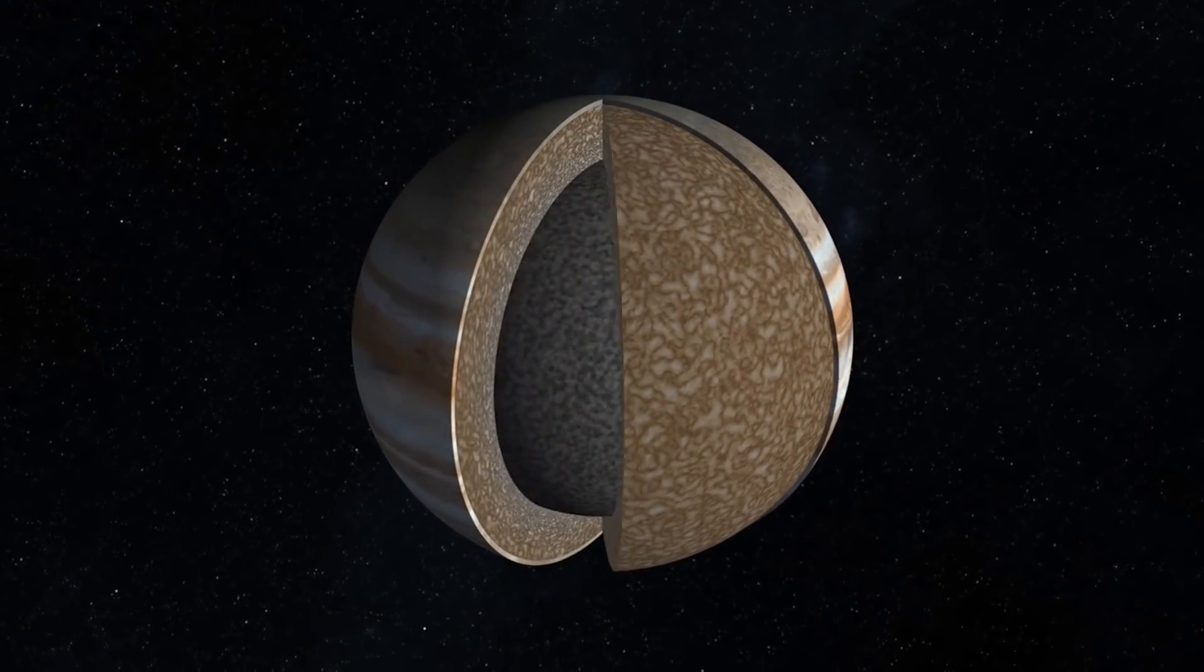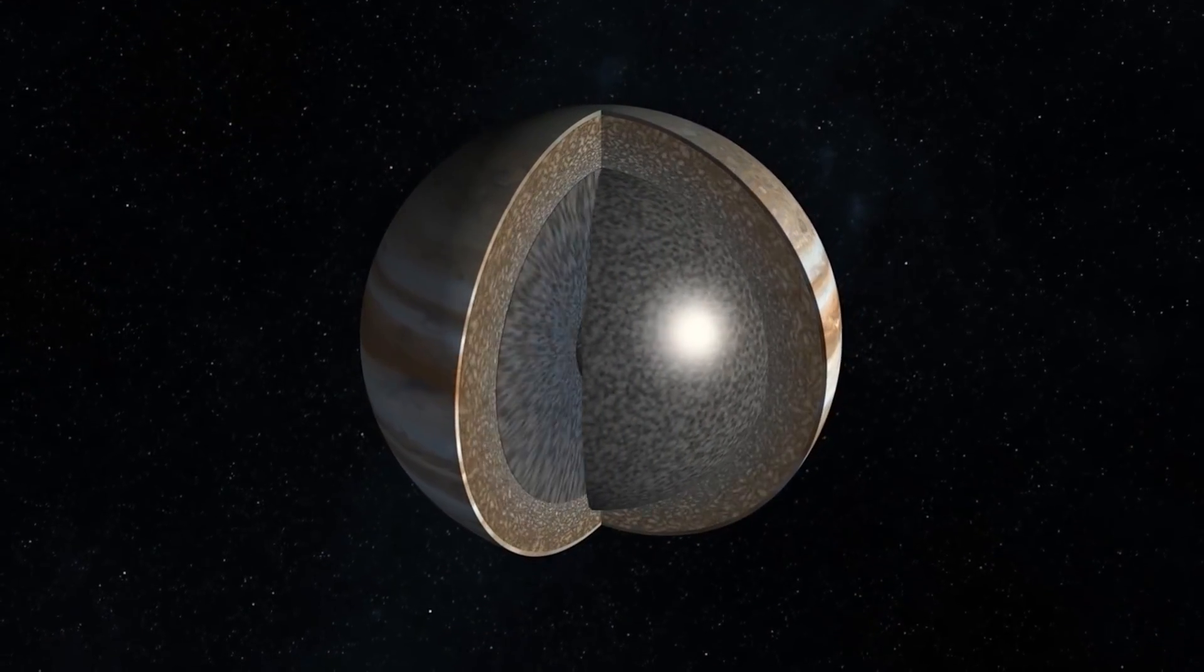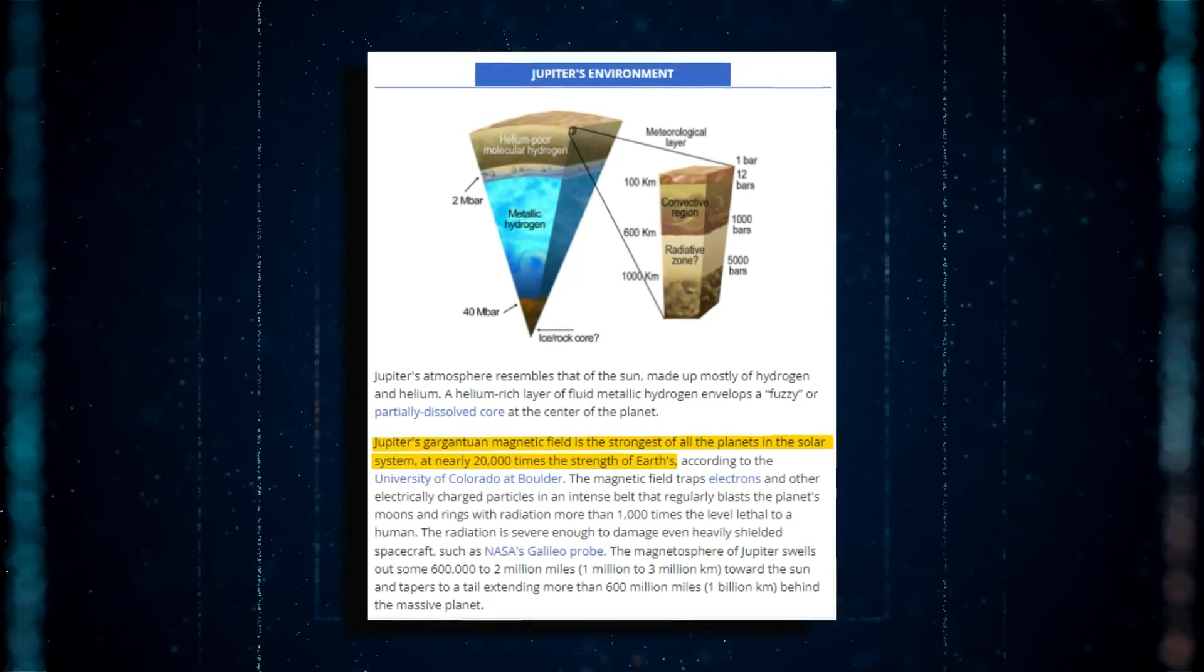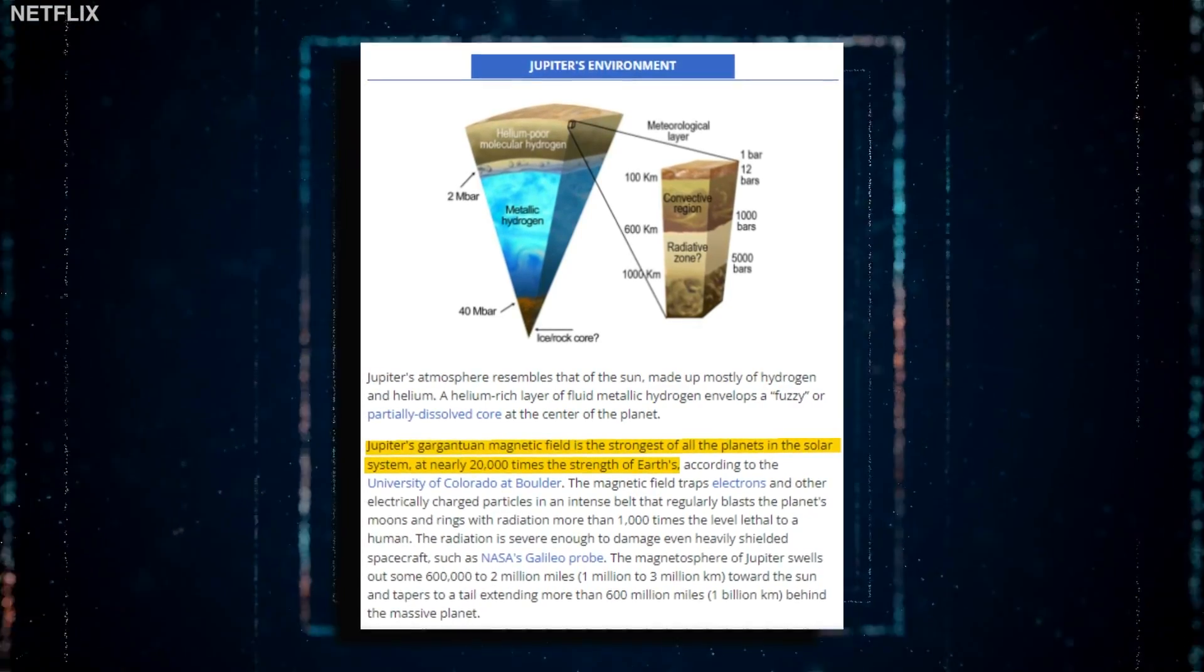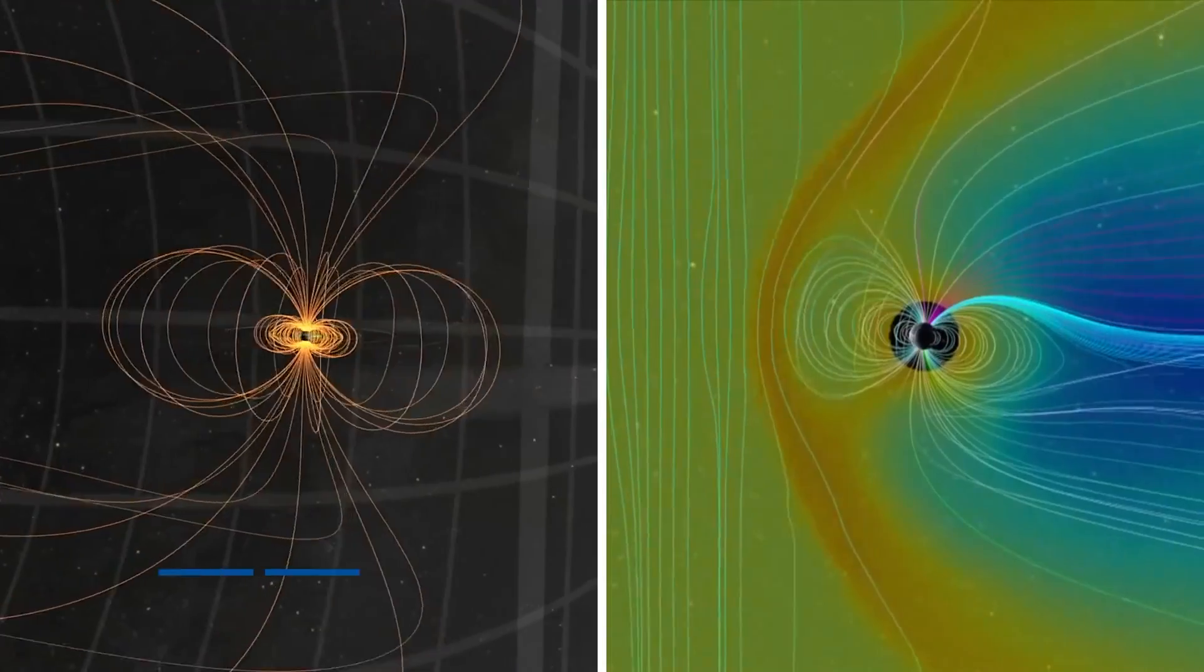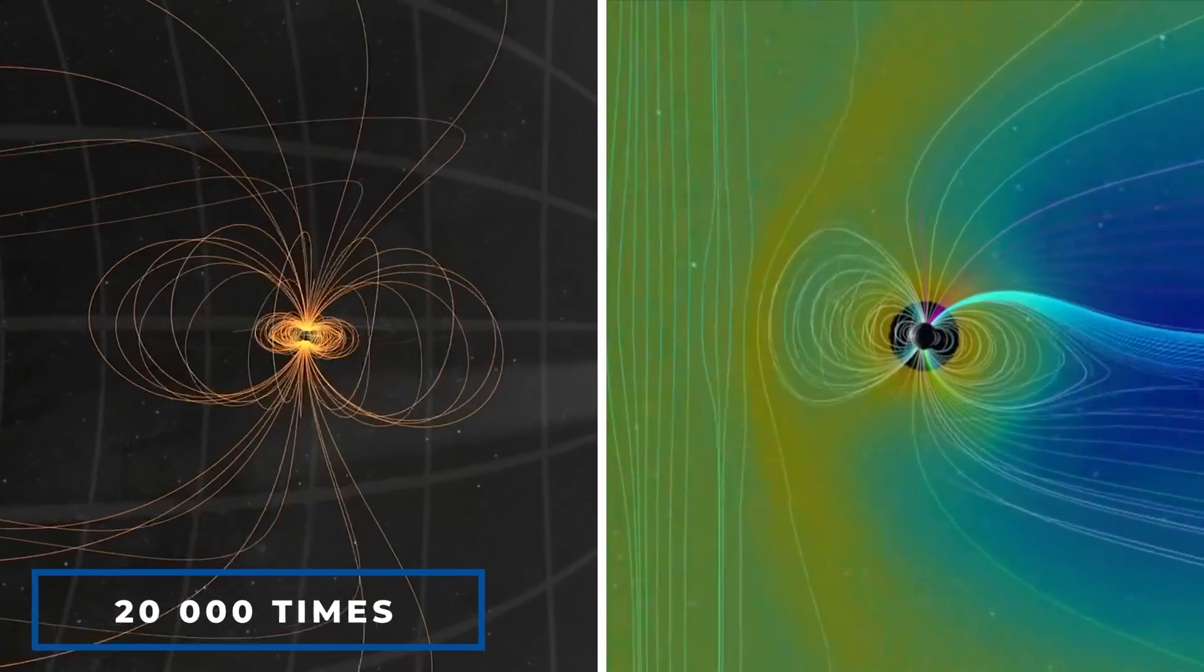At the planet's core, a fuzzy or partially dissolved core is enclosed in a fluid metallic hydrogen layer rich in helium. According to experts at the University of Colorado in Boulder, Jupiter has the greatest magnetic field of any planet in the solar system, roughly 20,000 times greater than Earth's.